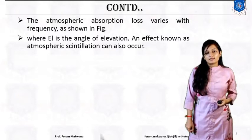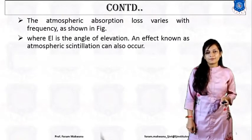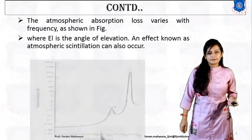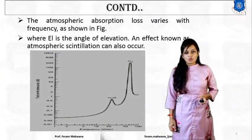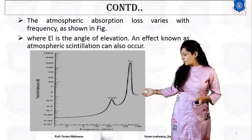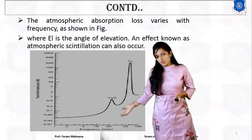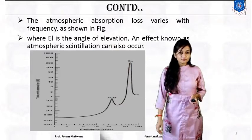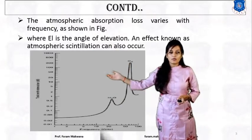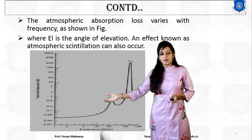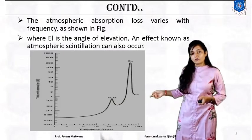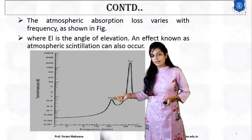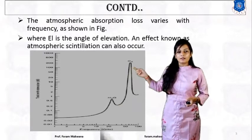Based on the gases already present in the atmosphere — how they are going to absorb, and at which frequency they absorb — the atmospheric absorption loss varies with frequency, as shown in this diagram. On the y-axis it is frequency, on the x-axis it is transmission attenuation in dB. We can see from this graph that we are getting two peaks. One peak at approximately 22 GHz.